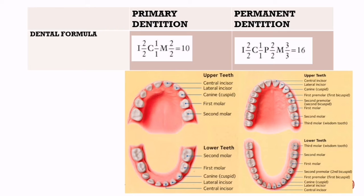In permanent dentition, the formula is 2123 for upper teeth, which indicates 2 incisors, 1 canine, 2 premolars, and 3 molars on one side of the upper mouth. This indicates 16 teeth on one side of the mouth, and when we multiply it by 2, a total of 32 teeth are present in permanent dentition.